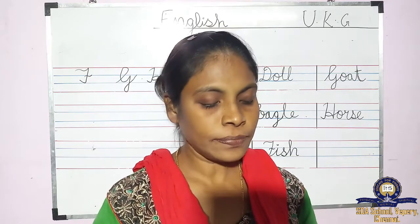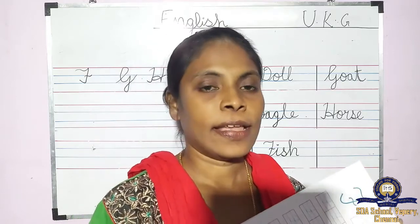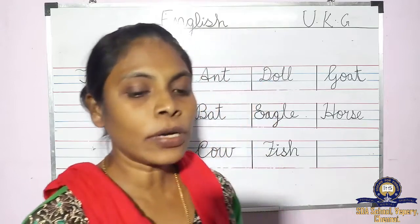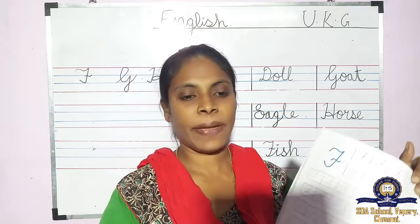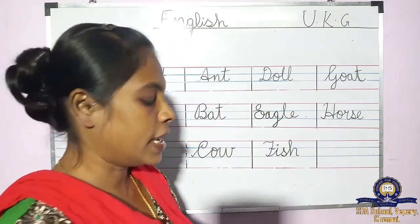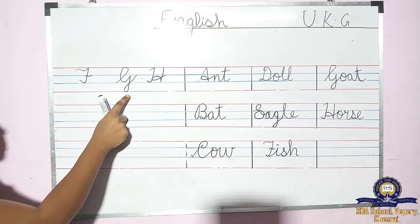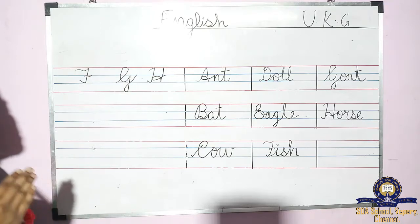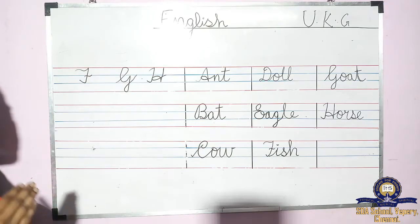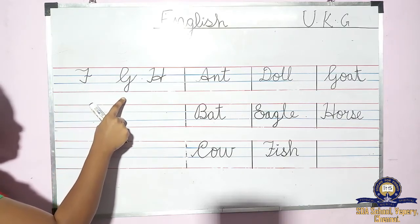Today we are going to learn the next letters in cursive. The next letters we are going to learn — okay, take your book, page number 10. Now see, what letters? F, G, H. In first term we learned small letters. In second term we are going to learn the capital cursive letters. The first letter is F, then G, then H.